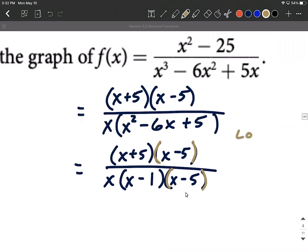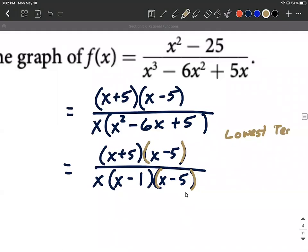So if I wanted to put this into what we refer to as lowest terms, that's when you cancel out that common factor, numerator, and denominator. In lowest terms, this looks like x plus 5 over x multiplied by x minus 1 when the x minus 5s get cancelled.